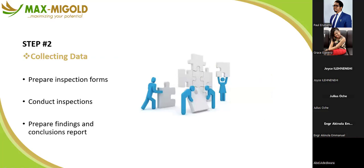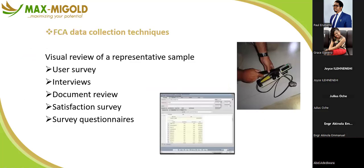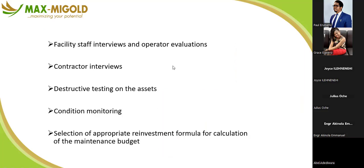Once pre-plans are set and you move to site, carry out the inspection: prepare inspection forms, conduct the inspection, prepare findings, and compile a conclusion report. Data collection techniques include user surveys, interviews, document review, satisfaction surveys, and questionnaires. You can send questionnaires for people to fill in, then summarize everything to come up with the necessary information to defend your data.